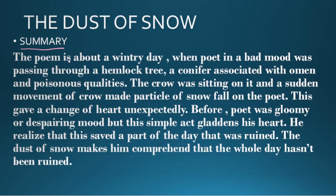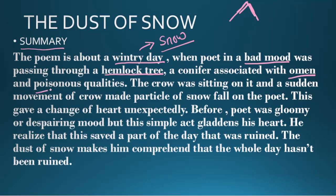The poem is about a wintry day — we are talking about snow here, so obviously it is a wintry day — when the poet, who is in a bad mood, was passing through a hemlock tree. As mentioned, it is a poisonous plant; it is a conifer associated with omens and poisonous qualities. 'Omen' means something like bad luck. The crow was sitting on it.